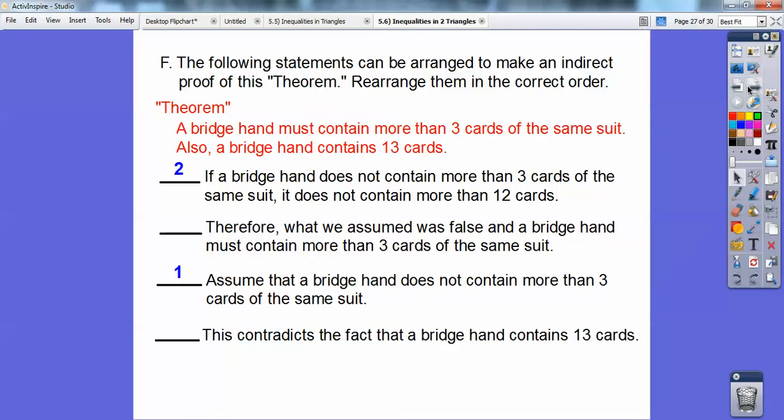Now this is given a bridge hand contains 13 cards. This says it does not contain more than 12 cards. So right here, this contradicts the fact that a bridge hand contains 13 cards. This must be my third one right here. And so obviously, that's my fourth one right there.